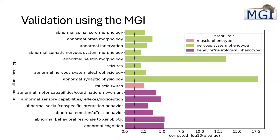We also got sensory capability, social — which is a big component of externalizing — emotional, which is also a big externalizing trait, behavioral response to biotic stimuli which relates closely to substance use disorder, and cognition. The only trait that came out that wasn't behavioral or nervous system is muscle twitch, which for a locomotor trait is not a hugely shocking result.